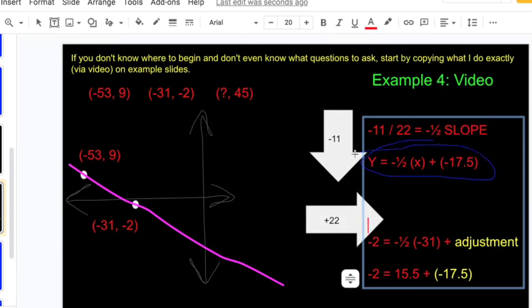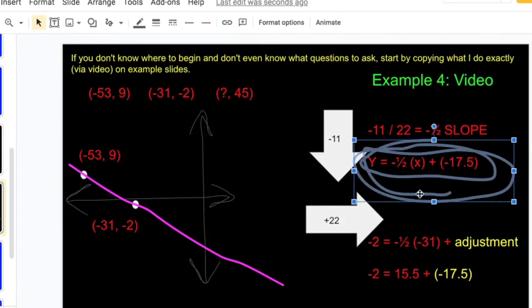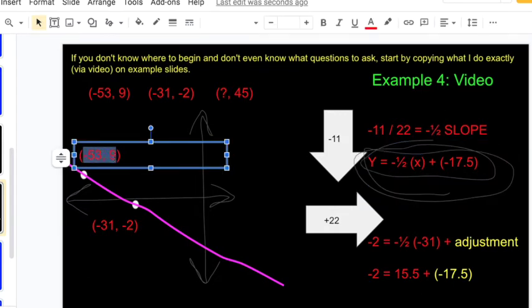That then is our formula. Let me double-check that it works with a calculator: negative one-half times negative fifty-three is twenty-six point five. Twenty-six point five minus seventeen point five is nine, which is exactly what we would expect it to be if the line goes through that point over there. So we're all good with the formula.